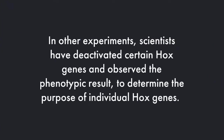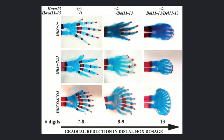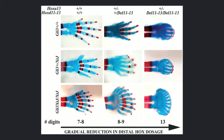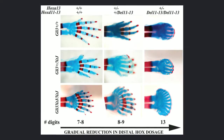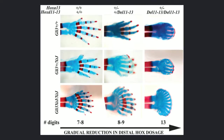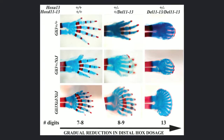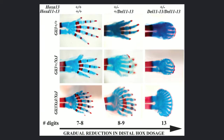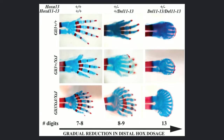In further experiments, scientists tested that by deactivating certain Hox genes, they could observe phenotypic results such as the loss of certain appendages. By doing this, they could narrow down the individual purpose of each Hox gene and determine the specific outcome of its activation. Here we can see a real-life example of the activation or deactivation of certain Hox genes — in this case, its effect on the number of finger digits, which can either increase or decrease depending on which Hox genes were activated or deactivated.